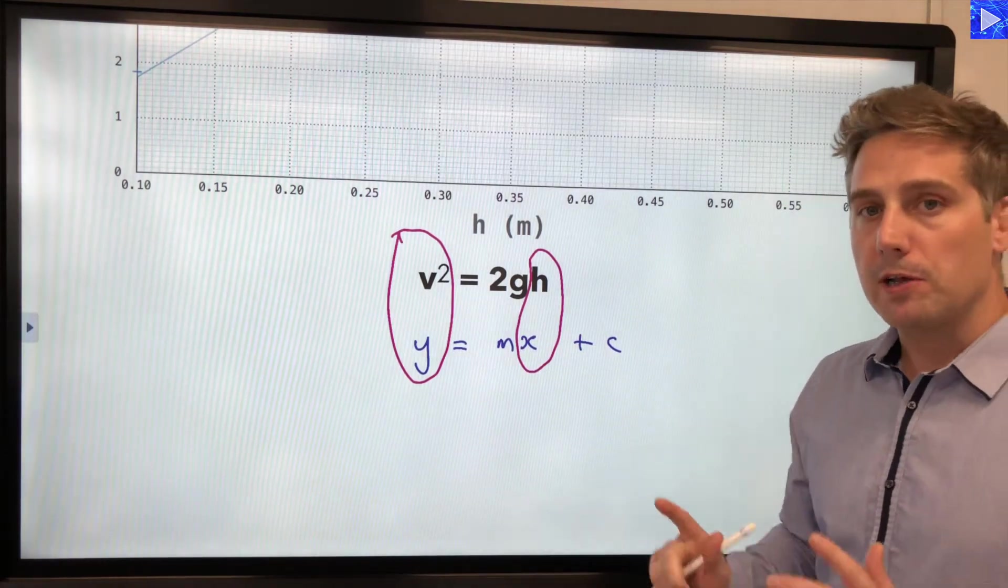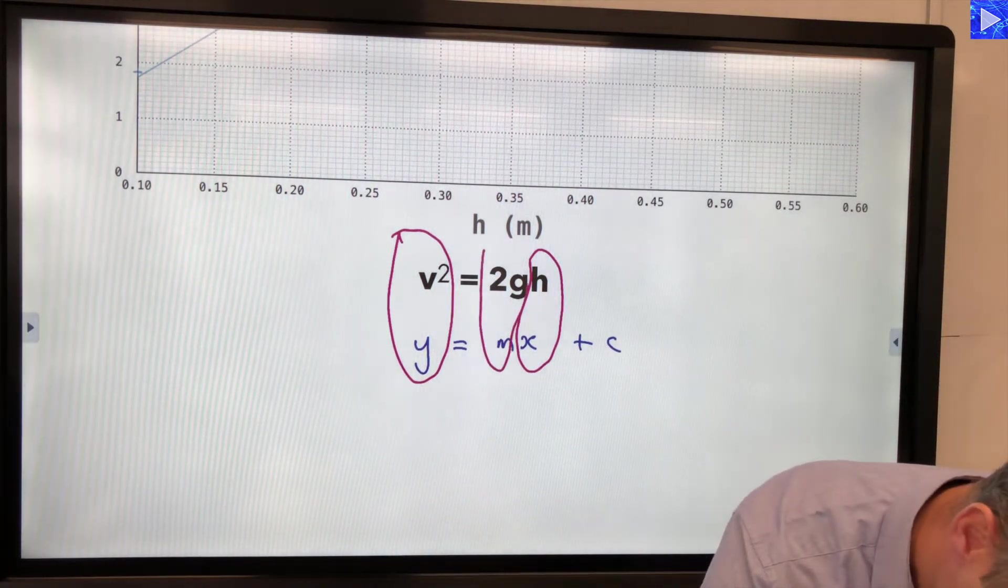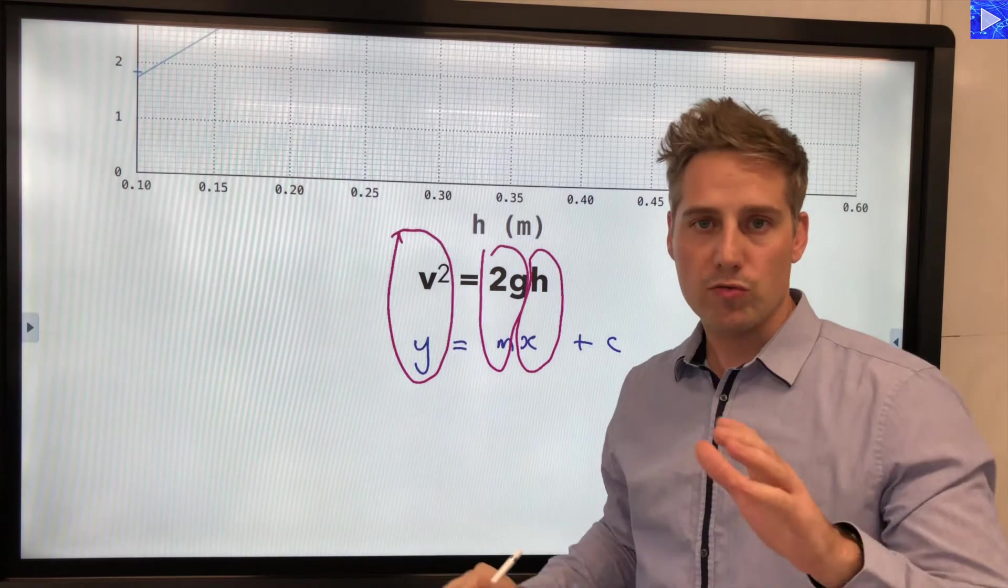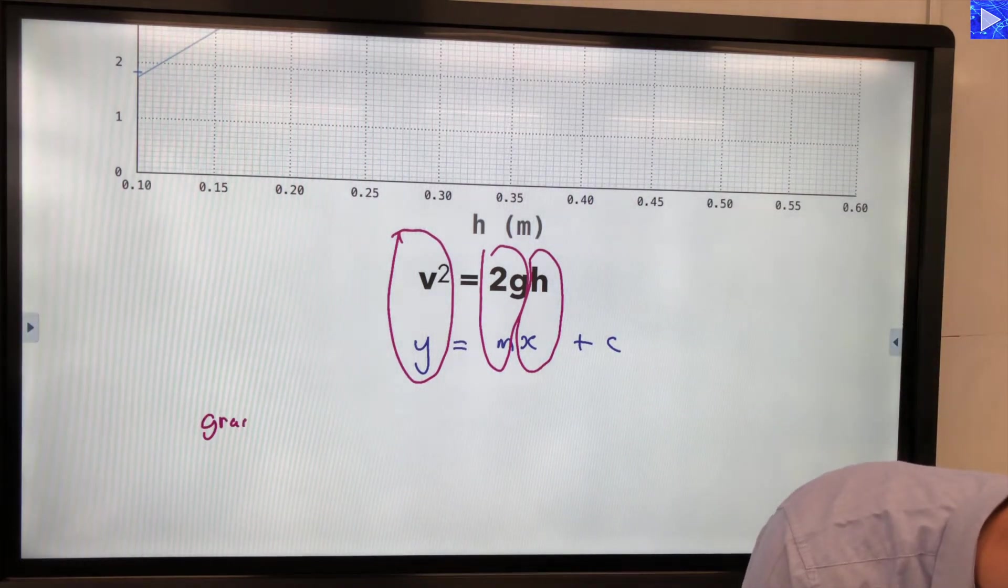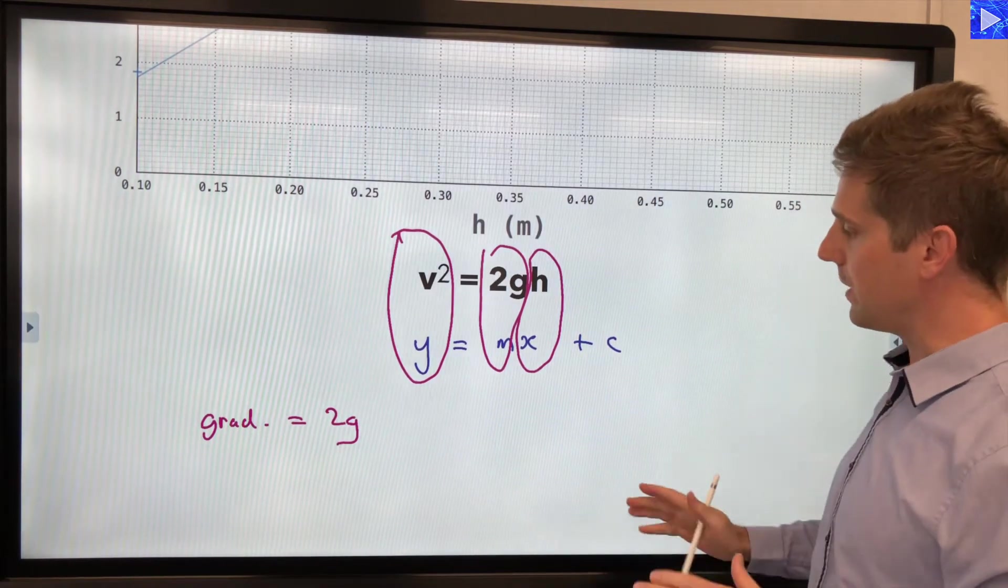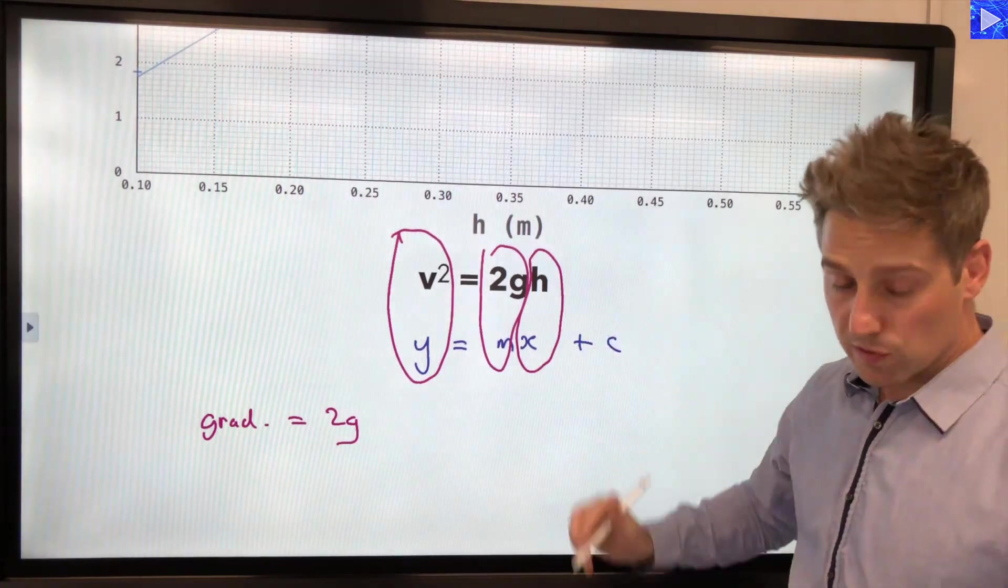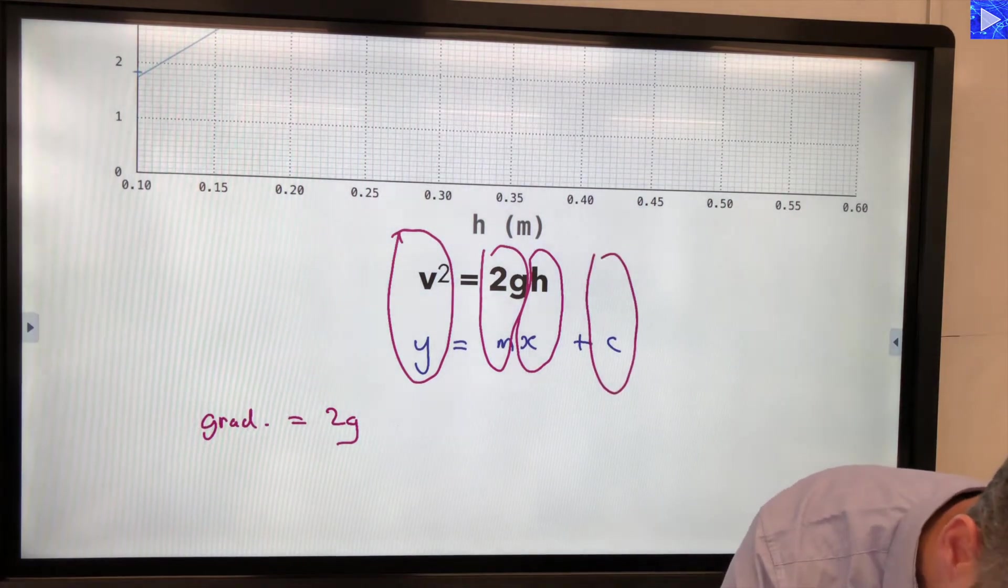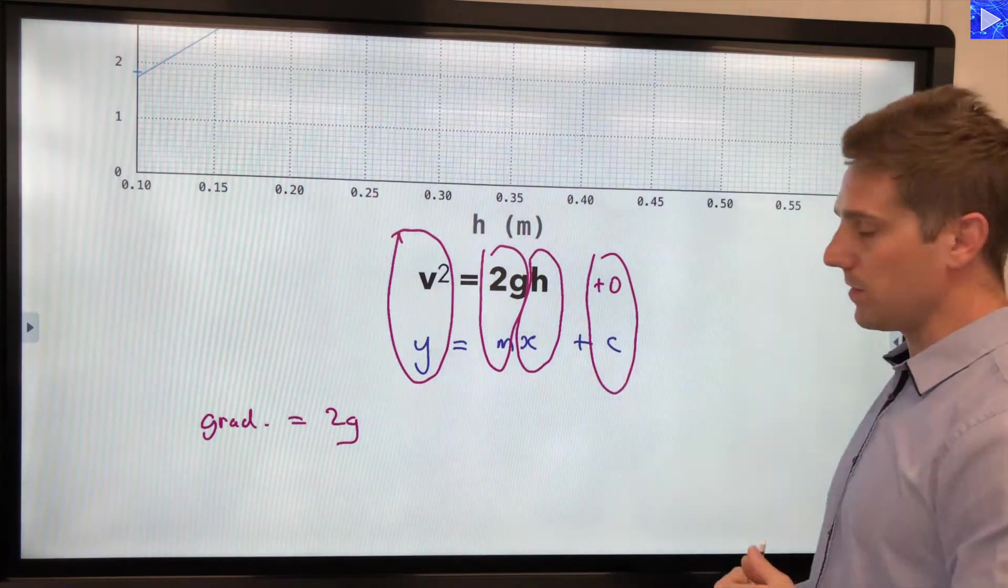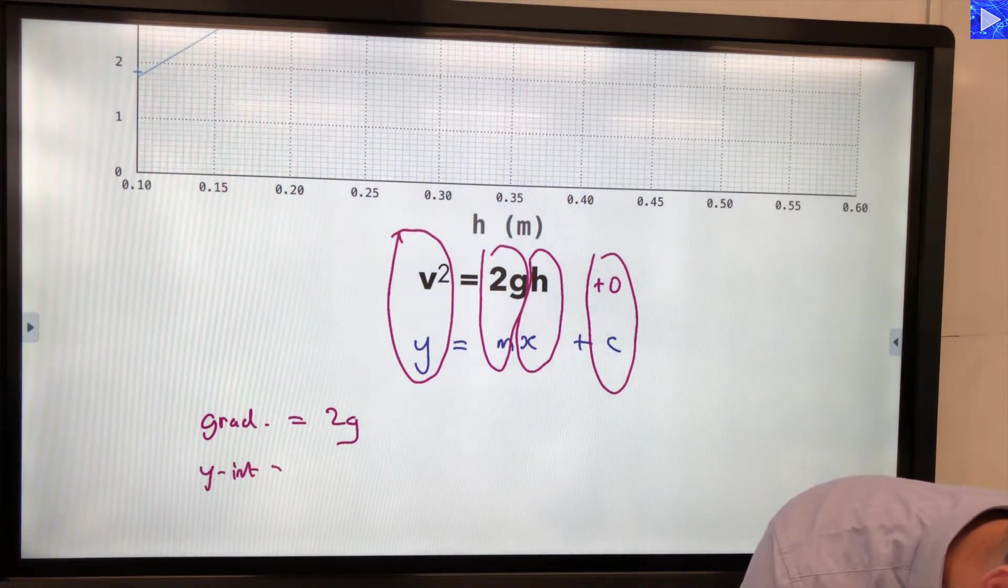Everything that is multiplied by h is equal to the gradient. In that case it's 2g. So what I always say to my students is write down here what the gradient is equal to. So I'm going to write gradient is equal to 2g. Okay we'll do something more with that in a moment but for now that's what we're doing. And then we can identify that whatever's added or subtracted here is equal to the y intercept. Well we've got 0 haven't we. This is like plus 0 there. So the y intercept is 0. The theoretical one is anyway. So we can write that down also. Y intercept equals 0.